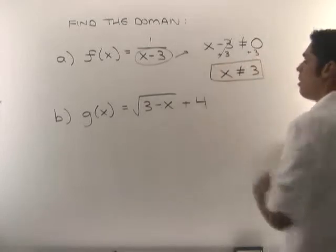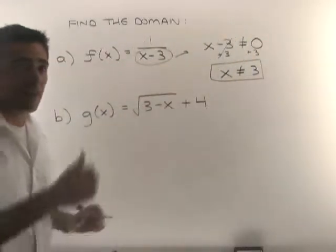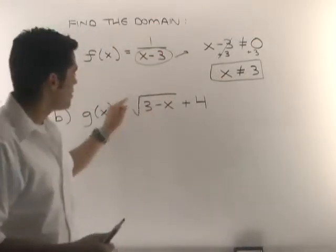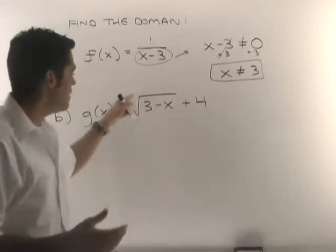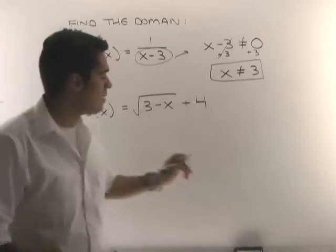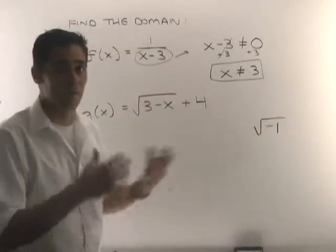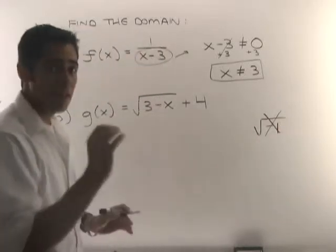Now, on the next example, we have a square root. So that's another red flag for you. When you see a fraction, that's a red flag. When you see a square root or a fourth root or a sixth root or something that's even out here, that's a red flag. And that's because in mathematics, we cannot take the square root of negative numbers unless we involve the imaginary numbers, which we don't want to do here. So that's not allowed. No negative numbers under the root.